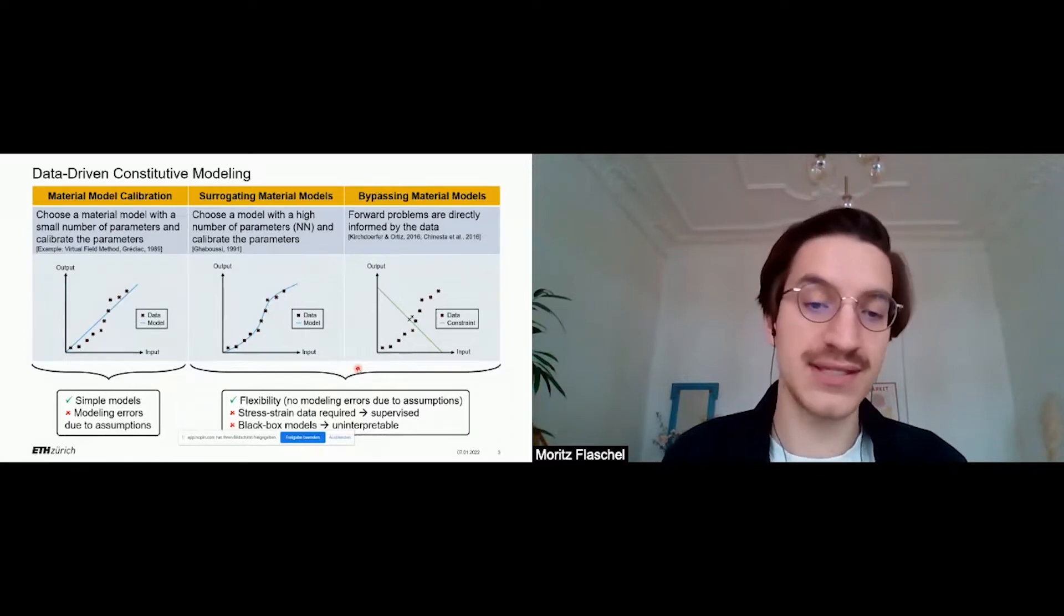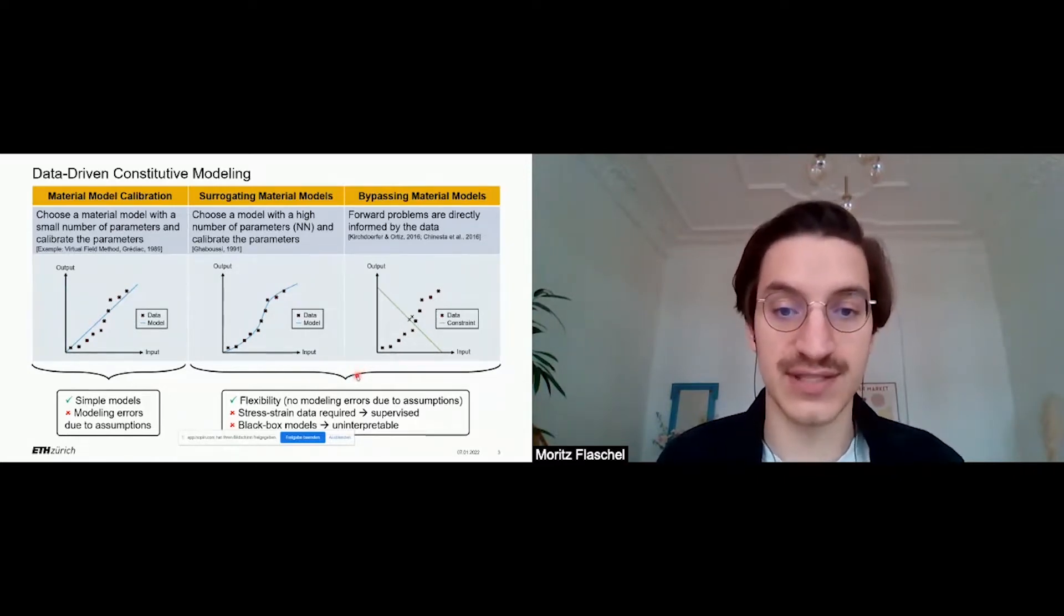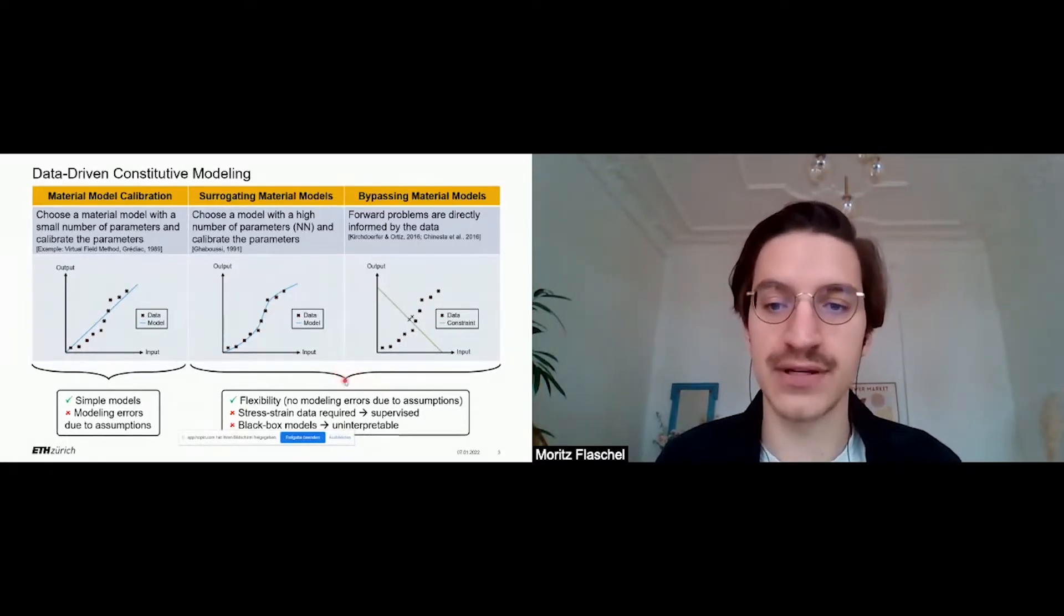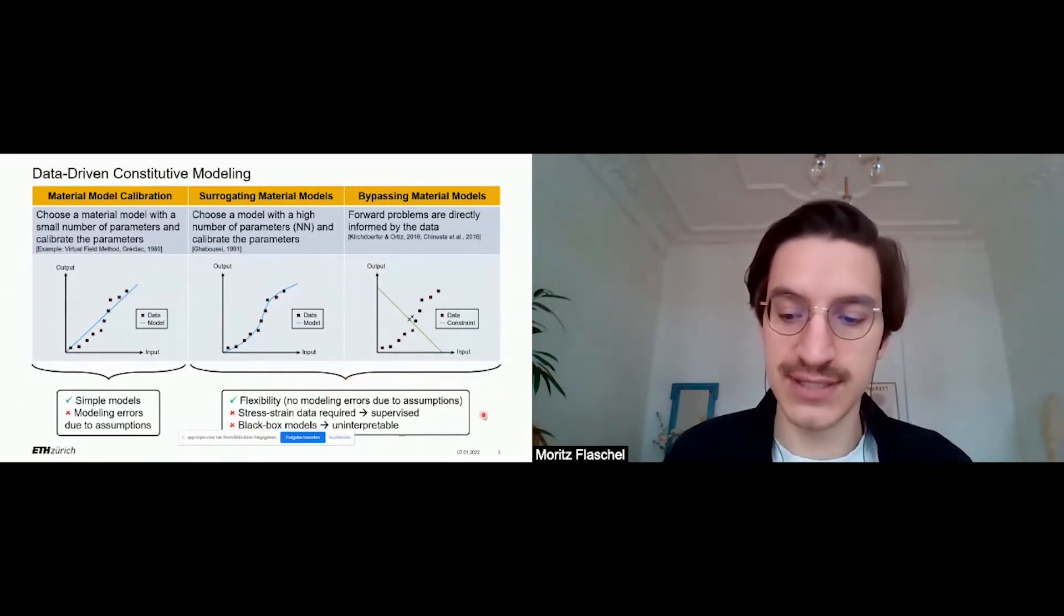However, the disadvantages are that, first, a lot of stress-strain data pairs are typically required for the state-of-the-art machine learning methods, which makes these methods supervised. And second, the methods typically have a black box type nature, and it's very difficult to physically interpret those material models.